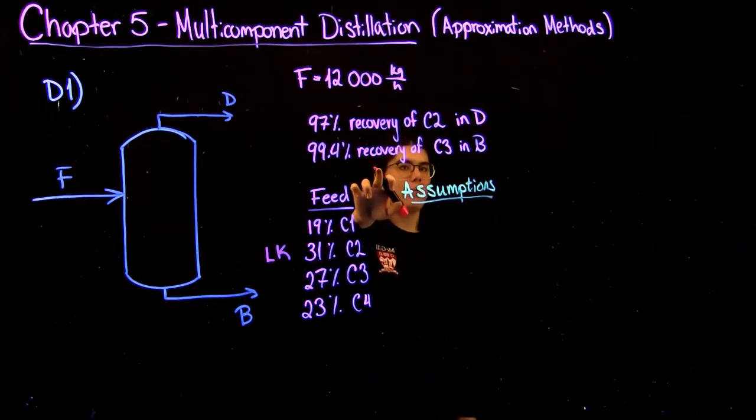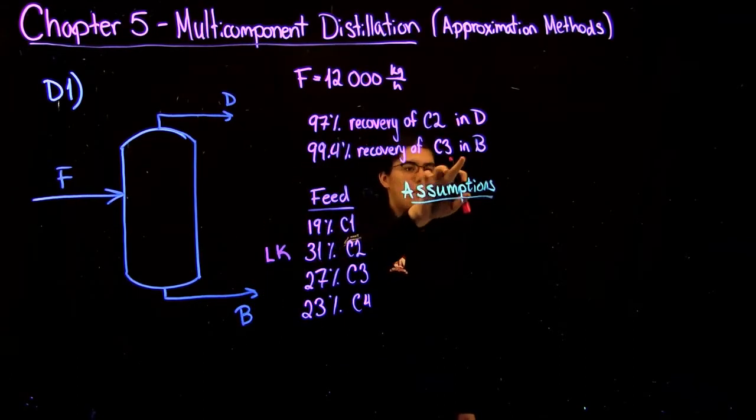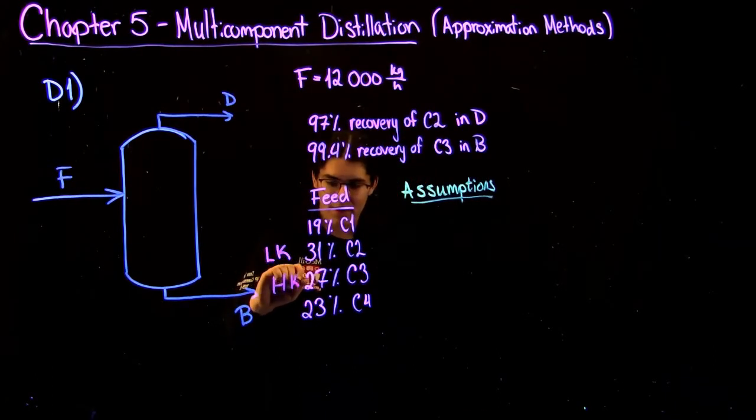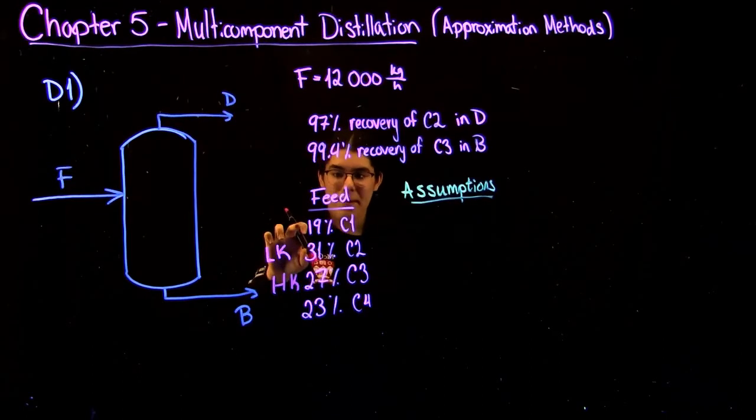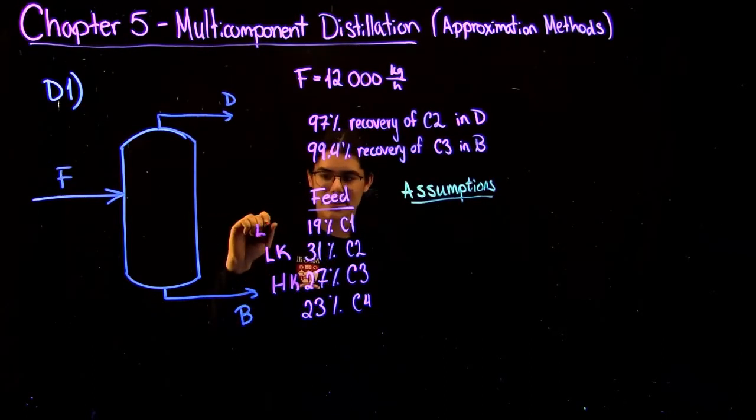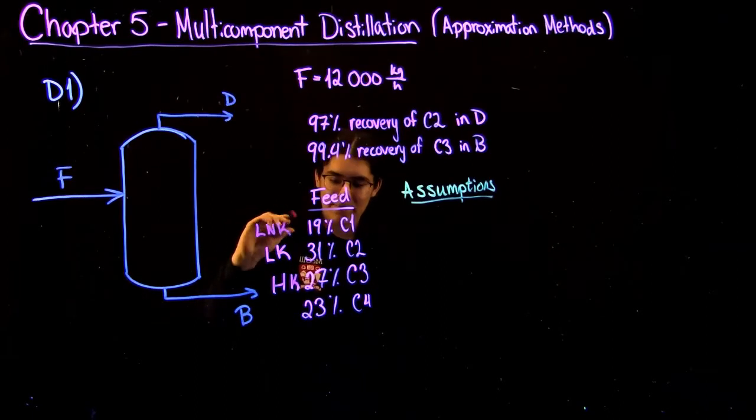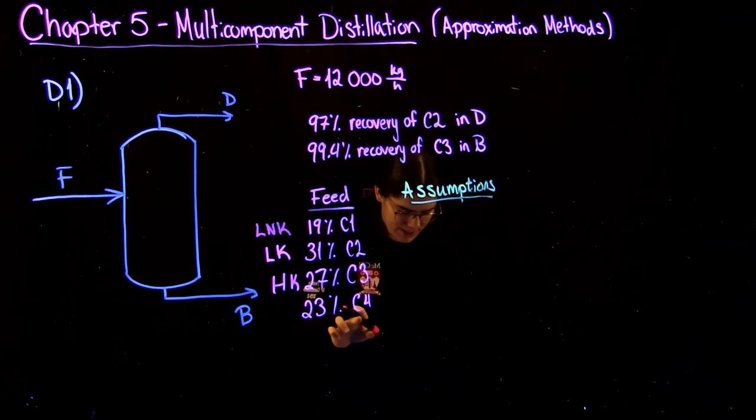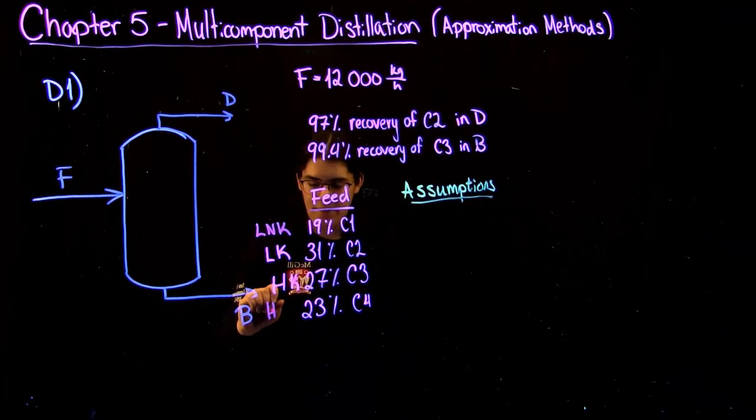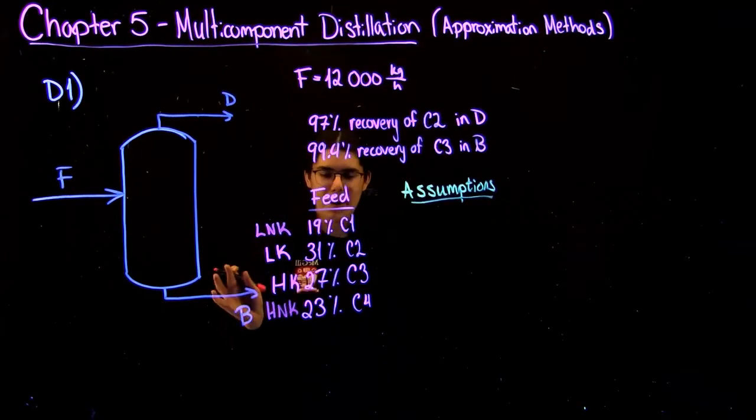Likewise, because we have recovery of propanol in the bottoms, we can say that that is our heavy key because it's coming out of the bottom. Because we know that methanol is lighter in molecular weight than ethanol, we can actually say that it's the light non-key, and we can say the same thing for C4, which will just be our heavy non-key.